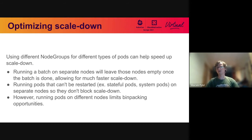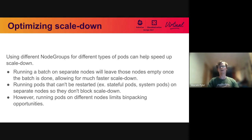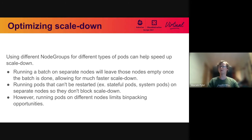Another common optimization is grouping different pods on separate node groups — separate sets of nodes. I'd recommend using a combination of a label and taint on the node, with a node selector and toleration on the pod. The node selector and label guarantee the workload goes onto its intended node group, and the taint prevents other pods from going there. A common use case is running a large batch: if pods in the batch are likely to end at the same time, this leaves nodes completely empty, resulting in much faster scale-down of all those nodes.